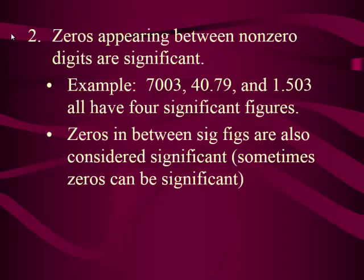Rule number two says zeros appearing between non-zero digits are significant. I love to nickname these rules. Rule number one is 'non-zeros.' Rule number two I call the bookend rule. You know the purpose of bookends on a bookshelf — they hold the books up. This rule has the same principle: if you have a non-zero on the left side and another non-zero on the right side, it doesn't matter how many zeros are in between — they get held up, they are significant.